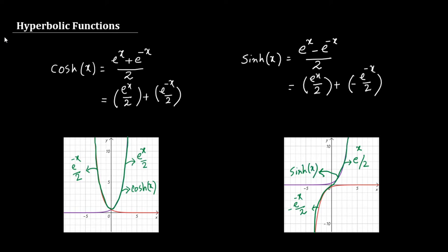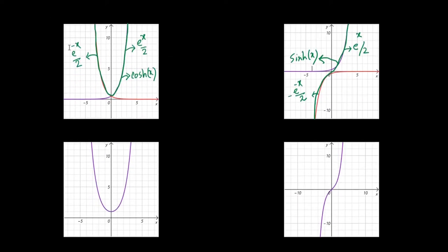If you plot hyperbolic cosine and sine, the plots will look like this. This is the plot for hyperbolic cosine x, and this is the plot for hyperbolic sine x.